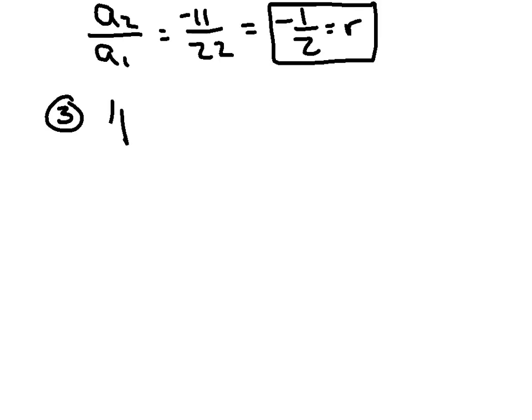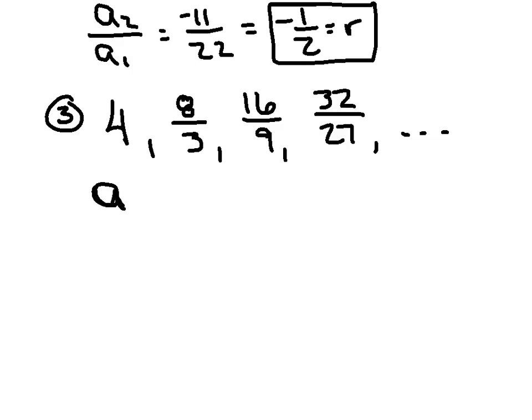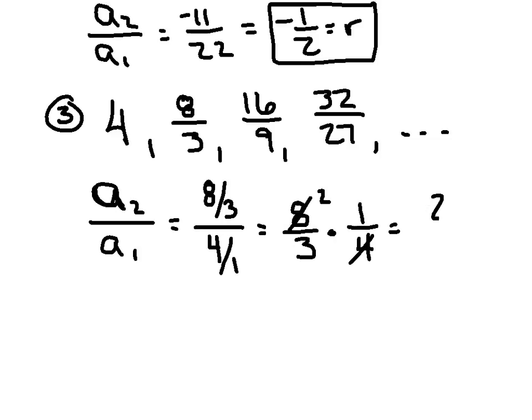For our third example, let's try 4, 8 thirds, 16 ninths, 32 over 27ths. There's a very nice pattern, and we are multiplying by the same amount each time, which makes it geometric. If you want that R value, just take the second term, 8 thirds, divide it by the first term. I'm going to be old-fashioned and do it by hand. I'll make 4 a fraction, 4 over 1, then multiply by the reciprocal of the second fraction, reduce a little bit, and I got a final answer of 2 thirds.